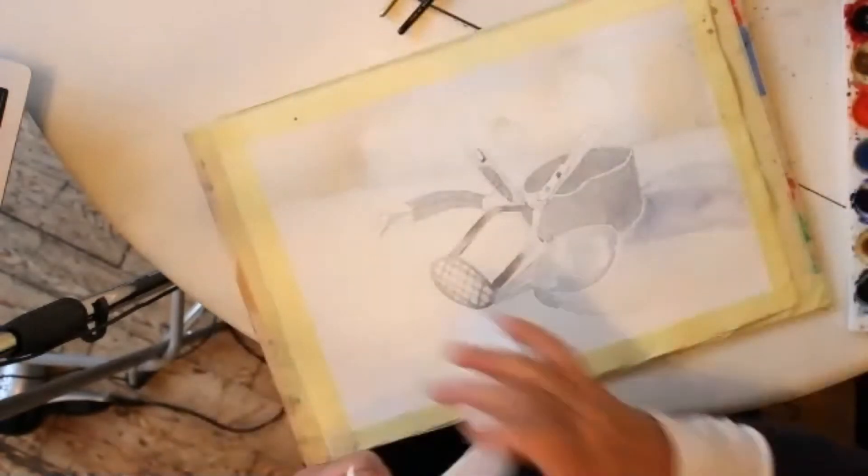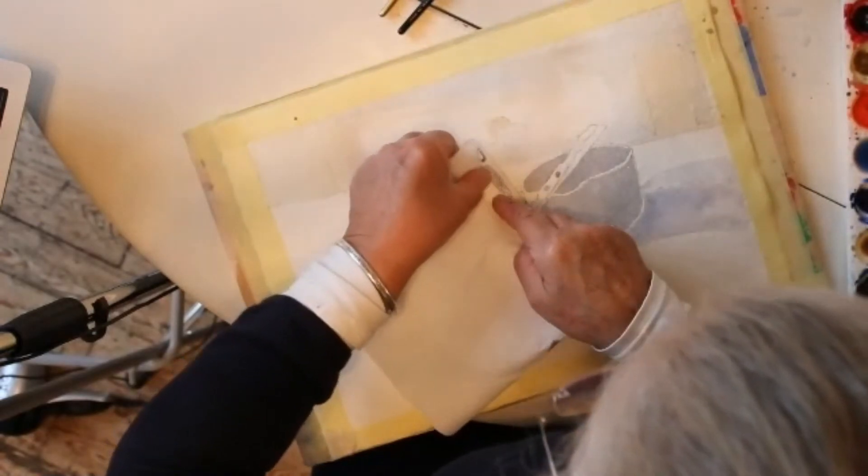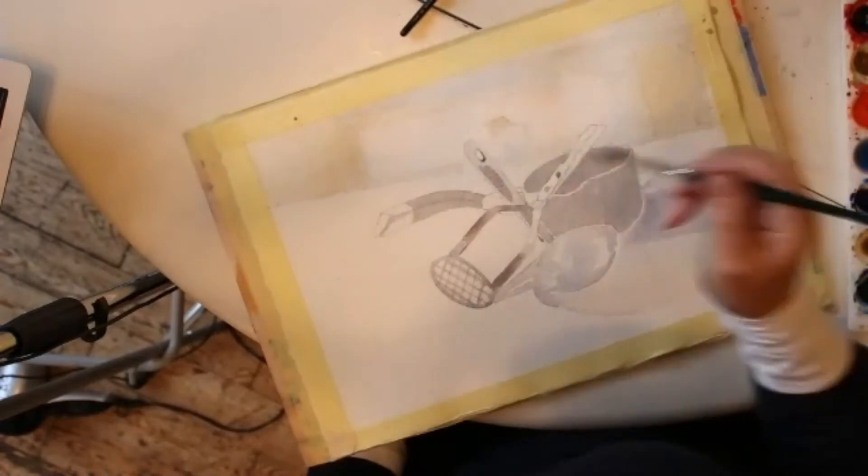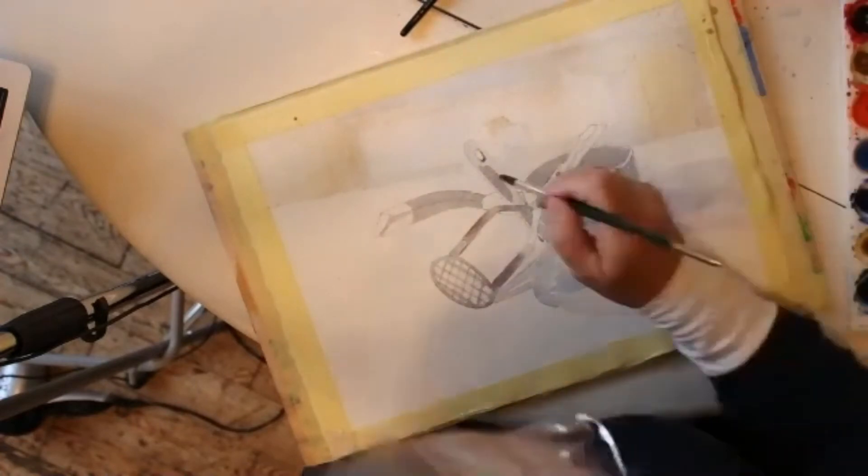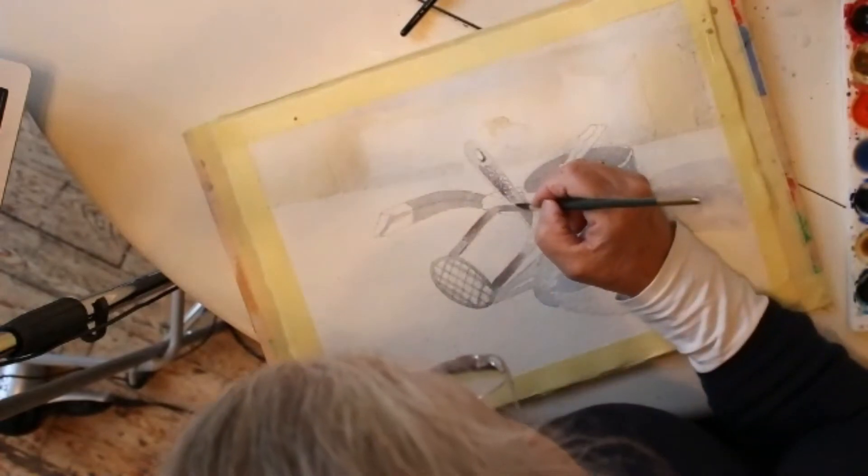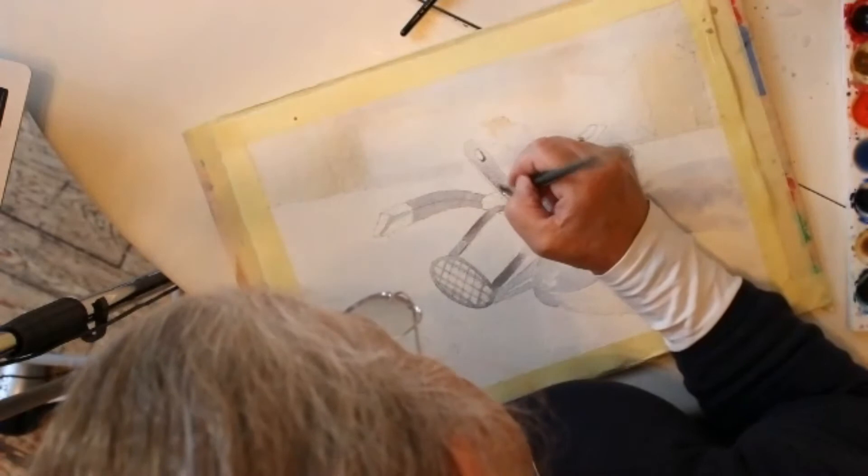Paper towel is enormously useful for lifting out if you need to, blotting, or drying your brushes. It has multiple uses and it's very handy when you're doing watercolor painting, so I always have plenty of it at hand.